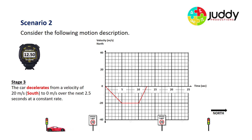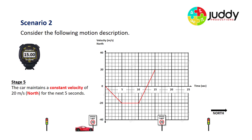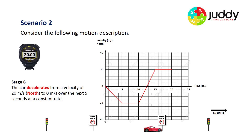Stage four: the car accelerates from zero to 20 meters per second north over the next 2.5 seconds at a constant rate, as shown on the graph. Stage five: the car maintains a constant velocity of 20 meters per second north for the next five seconds, shown as a straight line. Stage six: the car decelerates from 20 meters per second north to zero over the next five seconds at a constant rate. There's our graph for that particular motion — let's now analyze it.